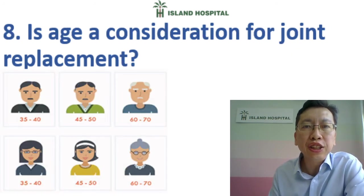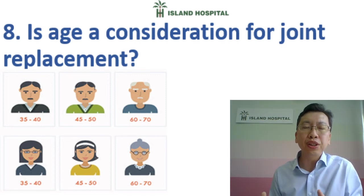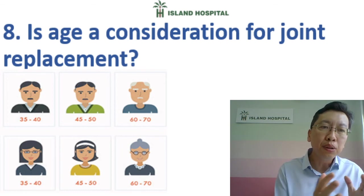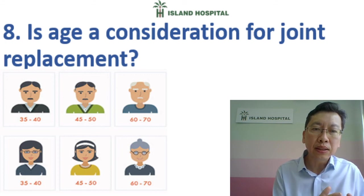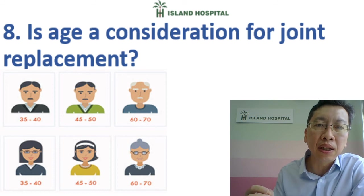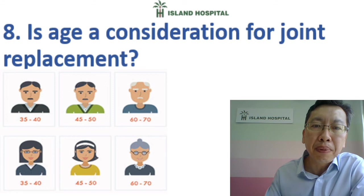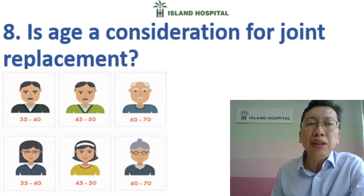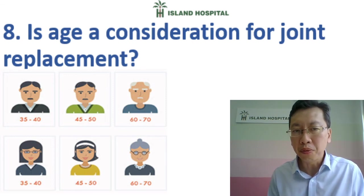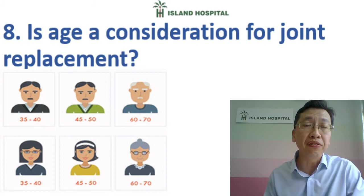Is age a consideration for joint replacement? Yes. Joint replacement has a lifespan, usually 15 to 20 years. The younger you do the surgery, the more likely you will eventually need a revision surgery due to loosening of the knee replacement after that time. Usually, if possible, we advise waiting until after 55 or 60 years old so that you don't have to have a revision surgery done.